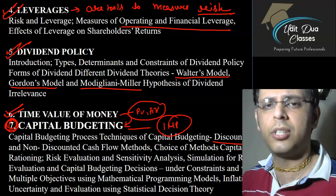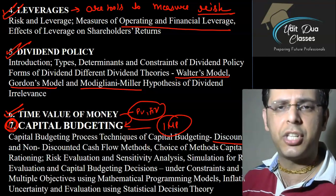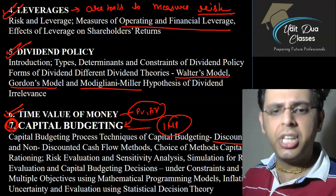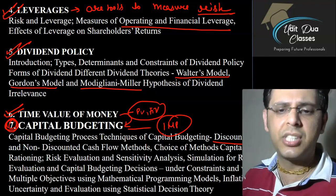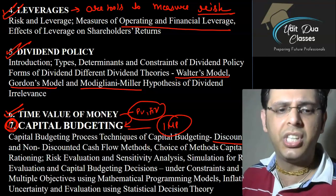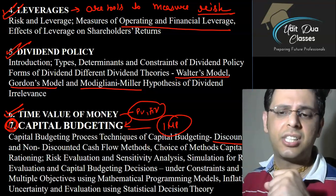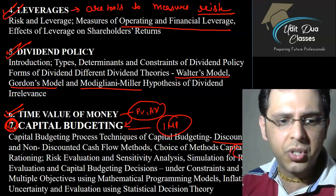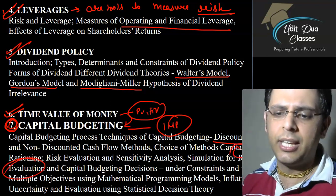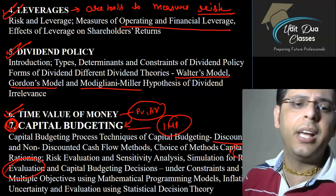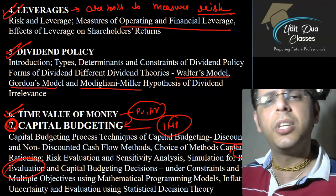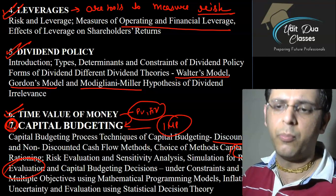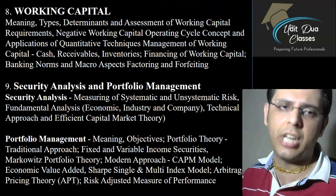Uske baad hum capital budgeting karenge - this is one of the most important chapters. Capital budgeting decisions - to evaluate long-term investment decisions: hume paisa kahan lagaana hai, machinery replace karni hai toh hum uska NPV dekhenge, net present value, present values, future values mein kitne benefits rahenge. Techniques of capital budgeting mein discounted techniques hain, non-discounted techniques hain. Non-discounted mein time value ka consideration nahi hota; discounted techniques mein time value ke concepts lagenge. Cash flow techniques, capital rationing, sensitivity analysis, capital budgeting ke different risk analysis ke decisions hum dekhenge.